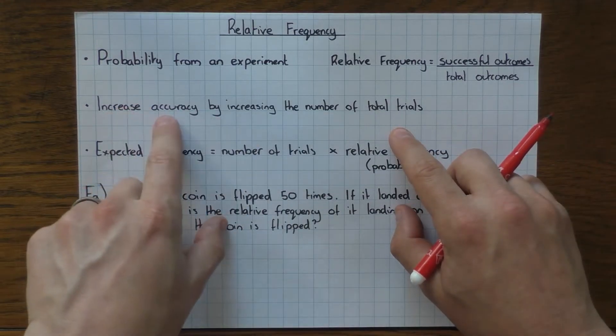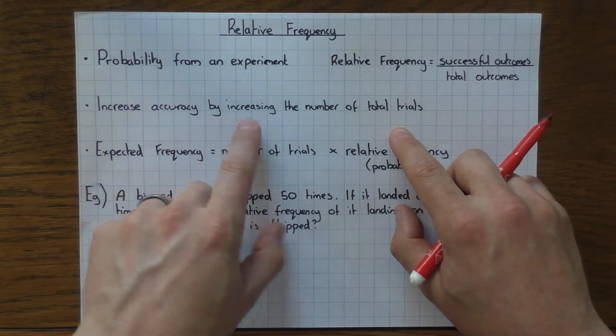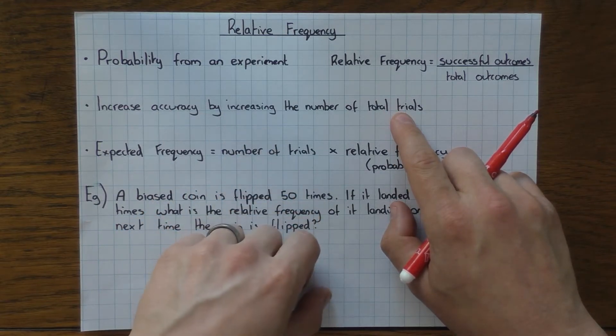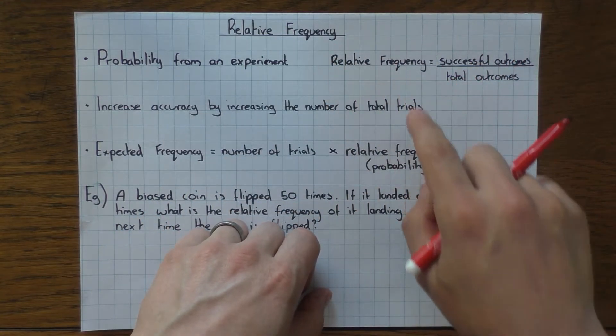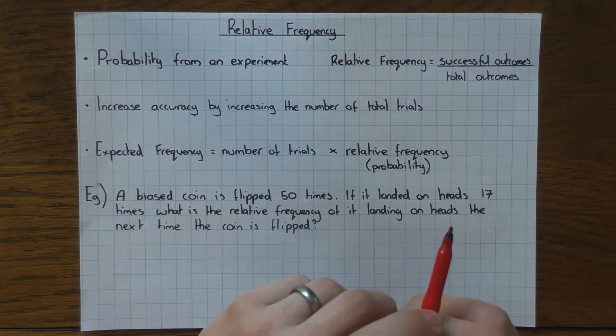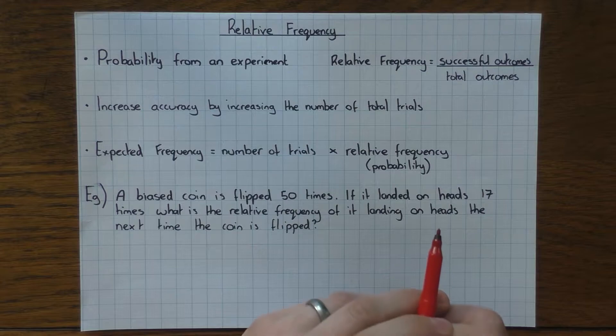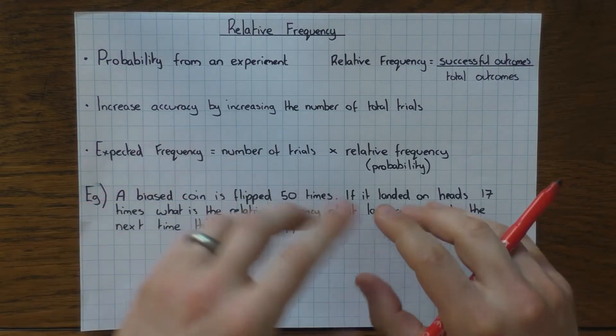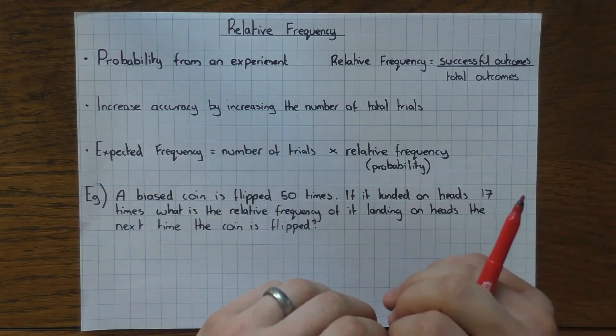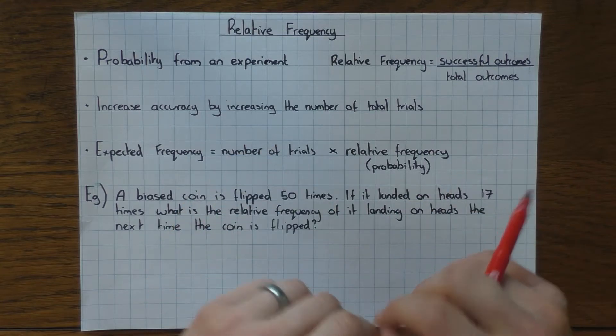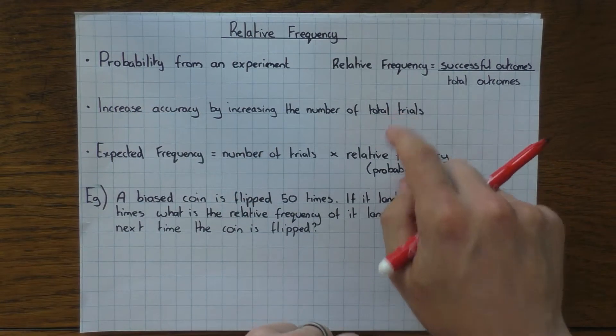To make it more accurate, to increase the accuracy, you do it more times. So if I was to do that experiment 100 times, whatever the relative frequency would be would be a much more accurate probability than if you were to do it just 10 times. So in exams quite often they will ask you what would increase the accuracy or how would you make this experiment better? Always do it more times.